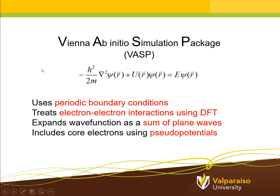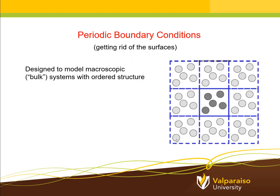VASP uses periodic boundary conditions to do the calculations. It treats the very important and difficult-to-calculate electron-electron interactions using density functional theory. It also writes down the wave functions — the psi in the Schrödinger equation — as a sum of simple plane wave functions. And it includes the influence of the core electrons, the ones closest to the nucleus that generally don't strongly influence chemical bonding, using a technique called pseudopotential theory. We'll go through these one at a time very briefly.